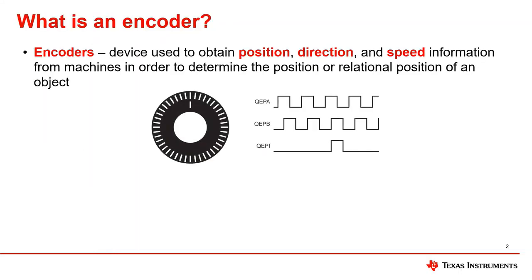To start off, what is an encoder? Encoders, also known as linear, rotary, or position encoders, are mechanical devices which are often attached to motors or rotors. They encode information such as position, direction, and speed into a set of pulses which can then be interpreted by microcontrollers.